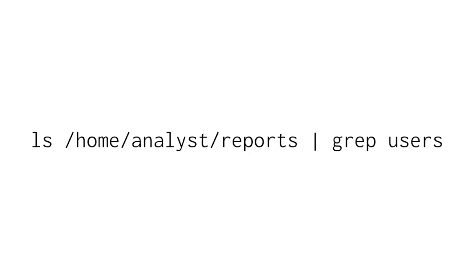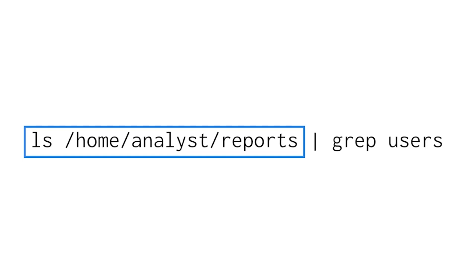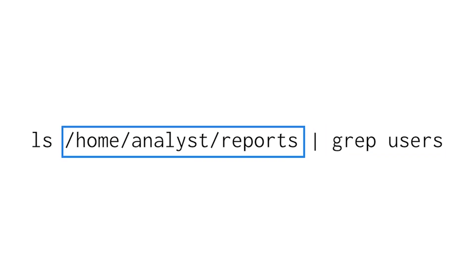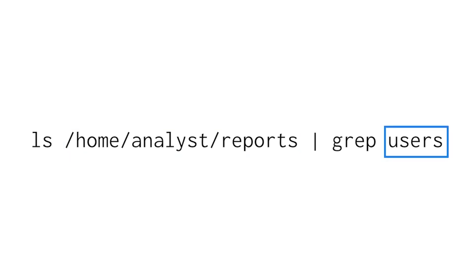Grep can also be incorporated after a pipe. For example, the ls command instructs the OS to output the file and directory contents of the reports subdirectory. But because it's followed by the pipe, the output isn't returned to the screen — instead, it's sent to the next command. Since grep follows the pipe, the output of the previous ls command indicates where to search, and grep returns all files and directories that contain the word 'users'.